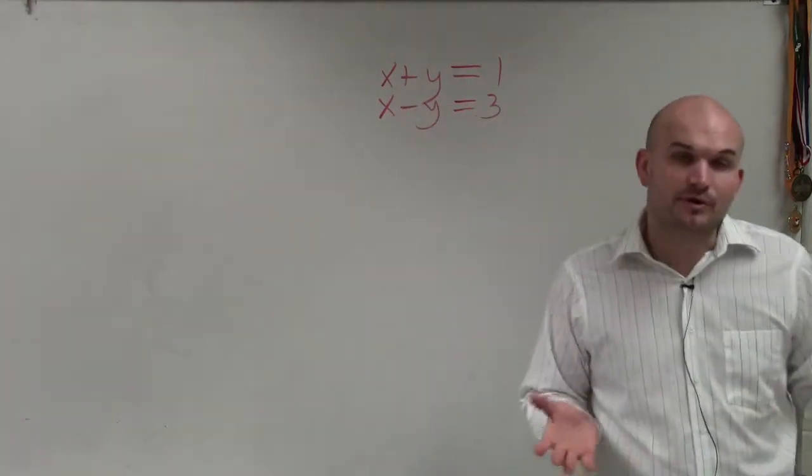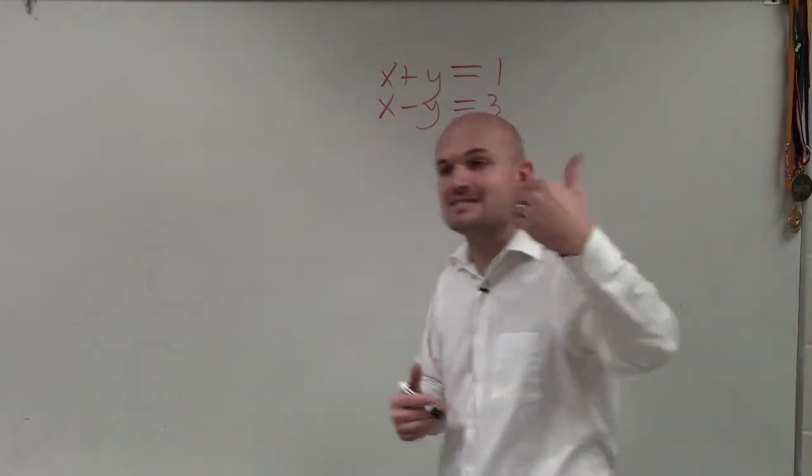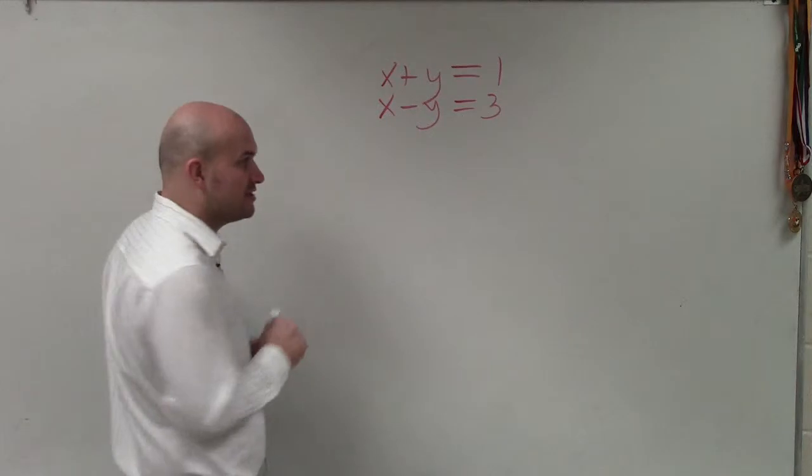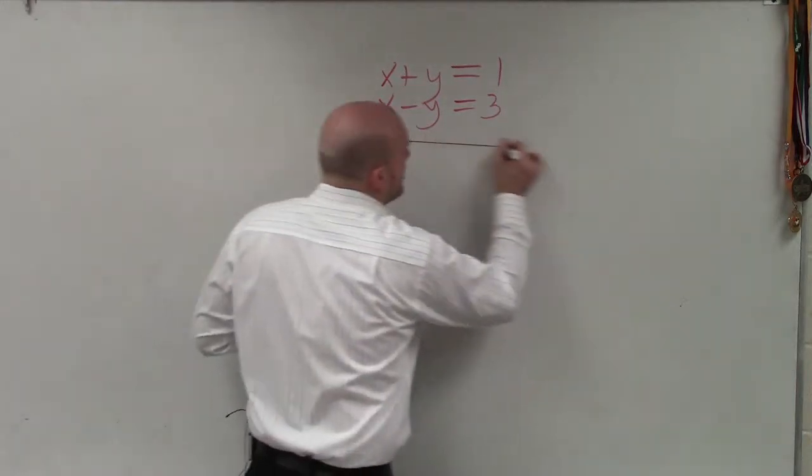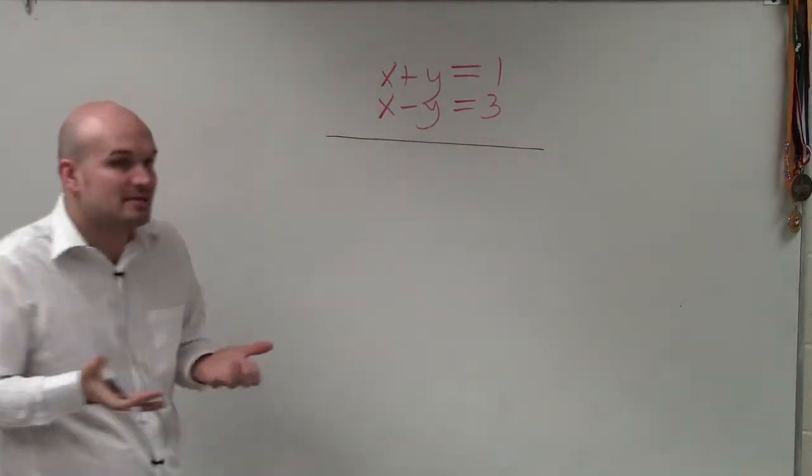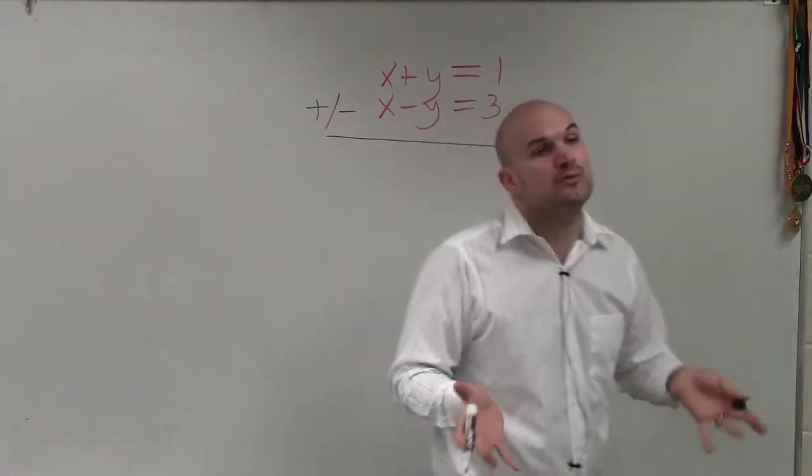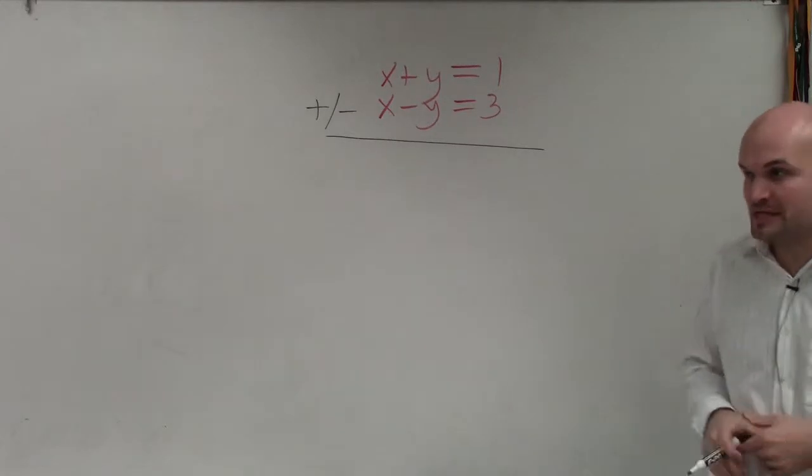Now, basically what we're going to be doing is we're going to be adding and subtracting the equations to eliminate a variable. So we can call this the addition method or the elimination method. But basically what we're going to be doing is adding or subtracting, you're going to want to do one operation or the other, the two equations.